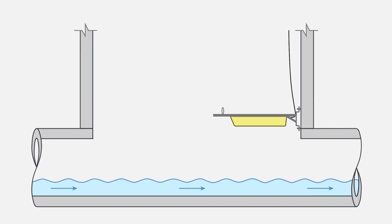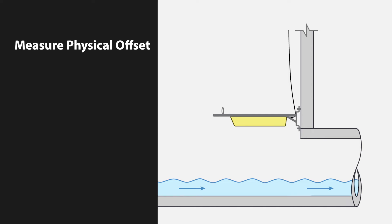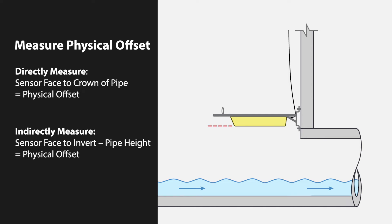Once the sensor is positioned on the wall mount bracket, measure the physical offset of the sensor, the distance between the face or bottom of the sensor and the crown of the pipe. There are two methods of measuring this distance: directly or indirectly. It may be easier to measure the physical offset indirectly.